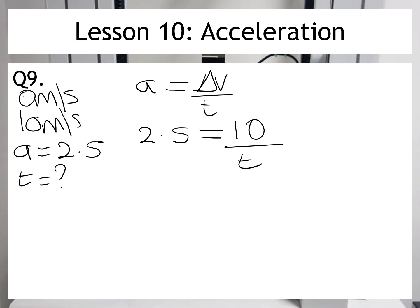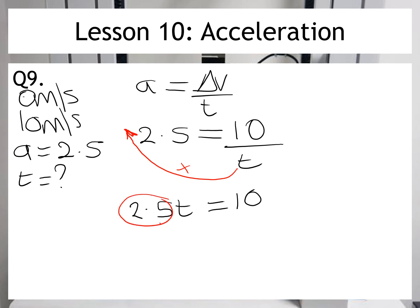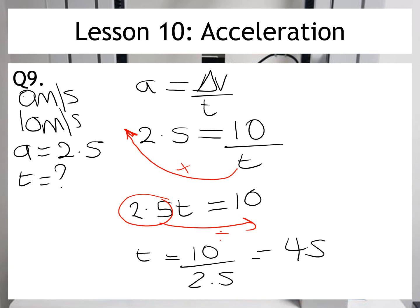Now, this is slightly more complicated to find because I want to get time on its own. So I need to move it up here — because it's divided down here, I'm going to have to multiply it. When I do that, I end up with 2.5 multiplied by T is equal to 10. But to get T on its own, I now need to move this 2.5 to the other side. And because at the moment it's multiplied, I'm going to have to divide. So I end up with T is equal to 10 divided by 2.5, which gives us 4 seconds. And there is the final answer.